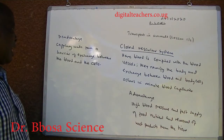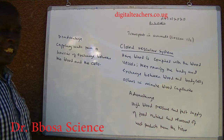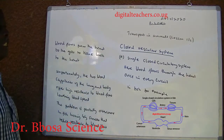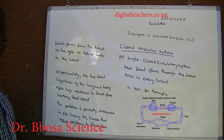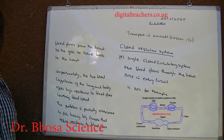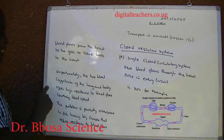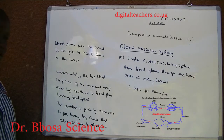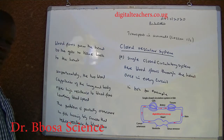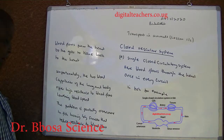Disadvantages of closed system: capillary walls form a barrier to exchange between blood and the cells. Single circulatory system: here blood flows through the heart once in every circuit. In a fish, for example, blood flows from the heart to the gills to the tissue back to the heart. Unfortunately, the two sets of blood capillaries of the gills and of the body offer high resistance to blood flow, lowering blood speed.